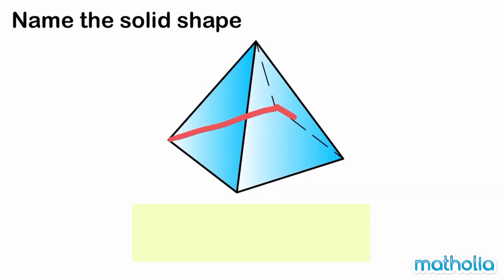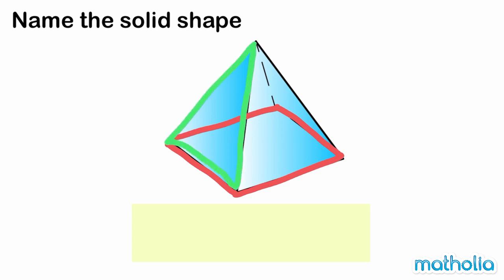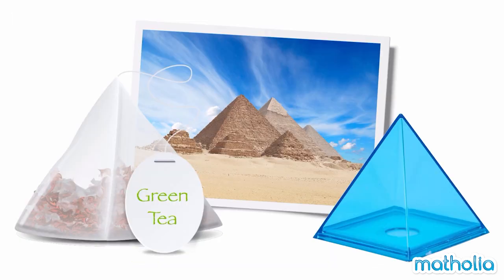This shape has a square face and some triangle faces. We call this solid shape a pyramid. These objects have shapes similar to a pyramid.